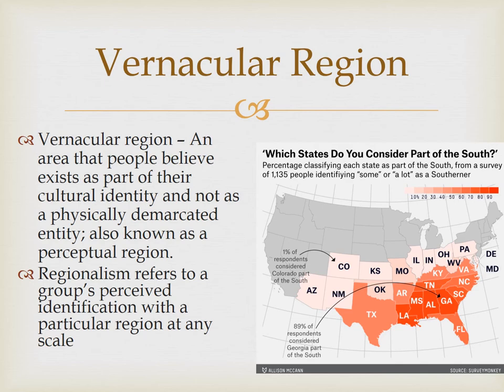Probably the best and most common example of a perceptual region is the American South. What I always like to do with perceptual regions is have students close their eyes and picture the South — go ahead and do that. Now, do you think we all have the same picture in our minds? Probably not. The key with perceptual regions is that they are perceived to exist by inhabitants through widespread acceptance, which means that sharp borders don't typically exist. As you move away from the core of that region, the characteristic that helps define it begins to weaken until it disappears.